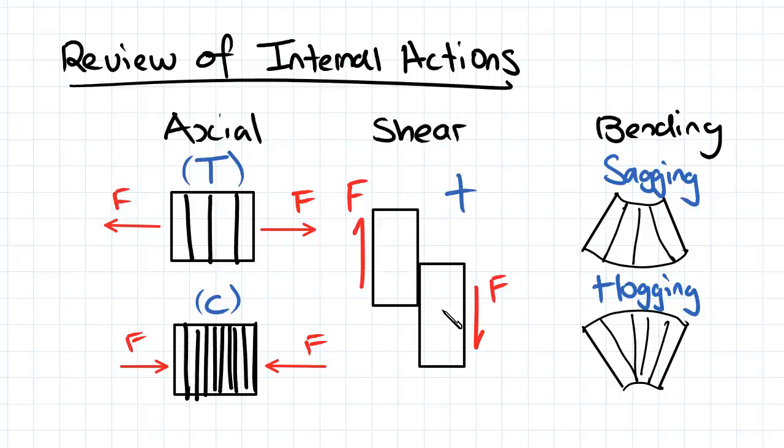Shear is defined as the relative movement of two planes in a member transversely to the member length. And bending can come as either sagging or hogging.